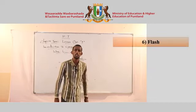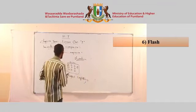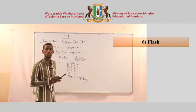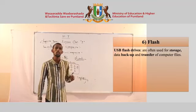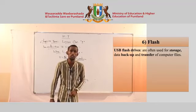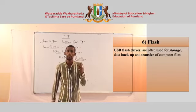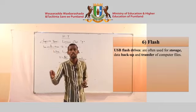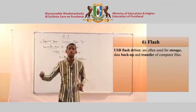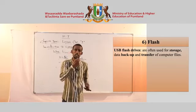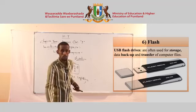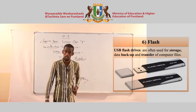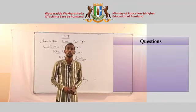A USB flash drive — also called a flash disk — is a Universal Serial Bus storage device. You can use it to transfer computer files. It is used for storage, data backup, and transferring files from one computer to another.